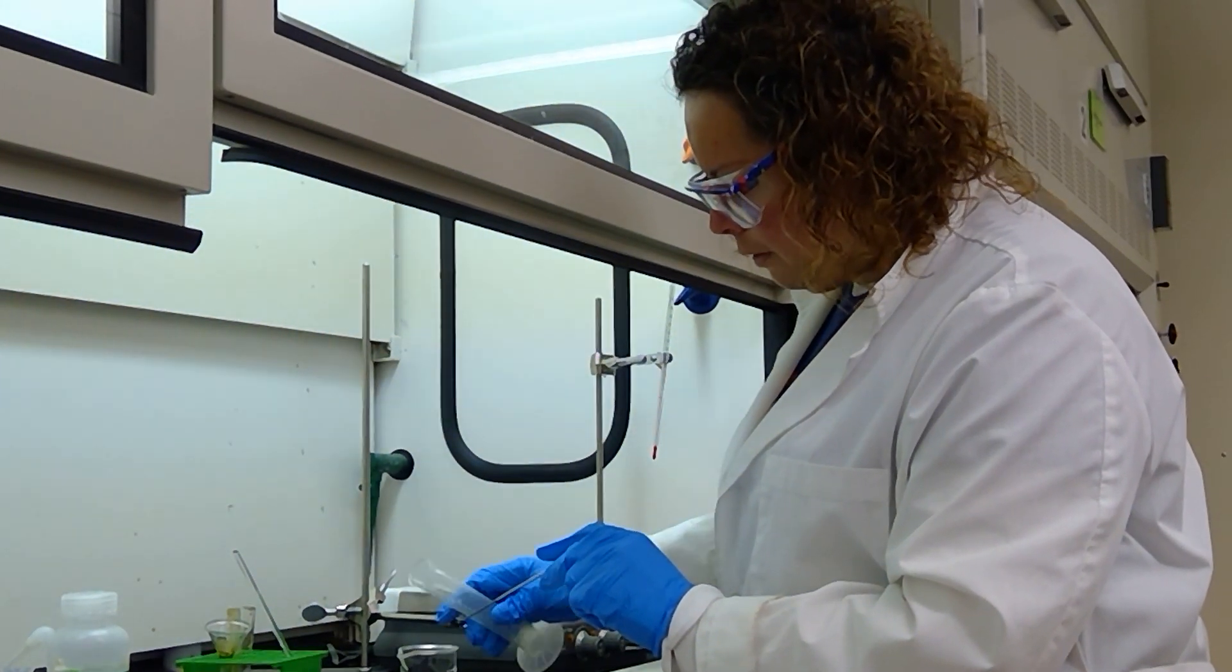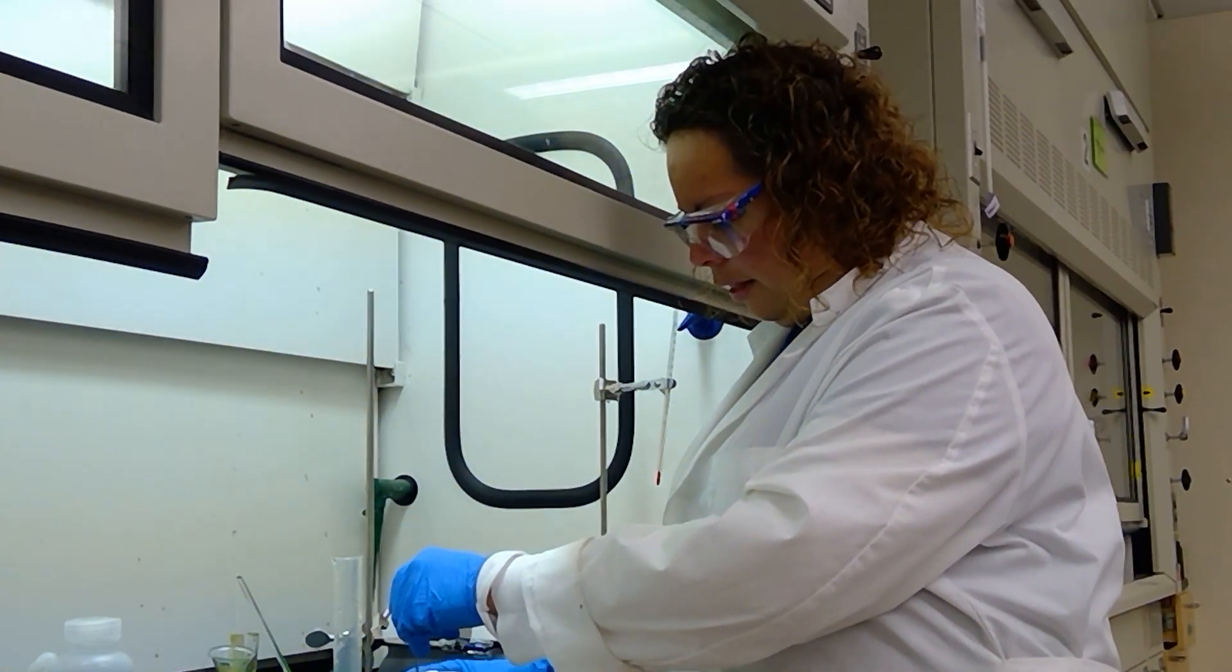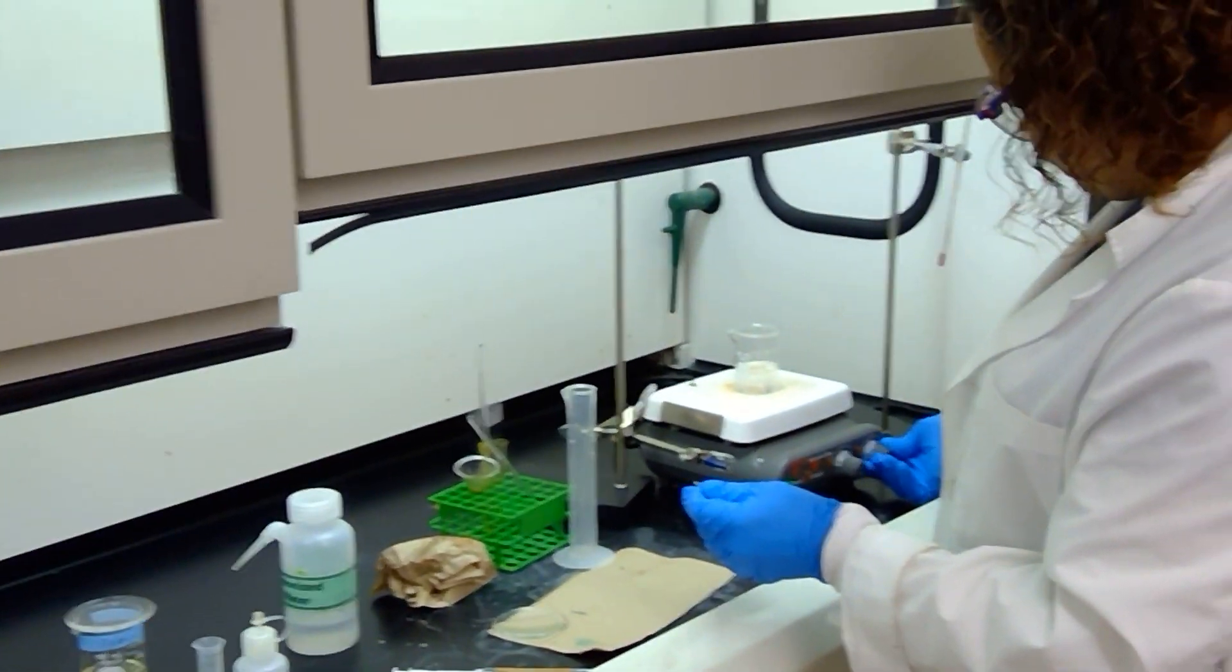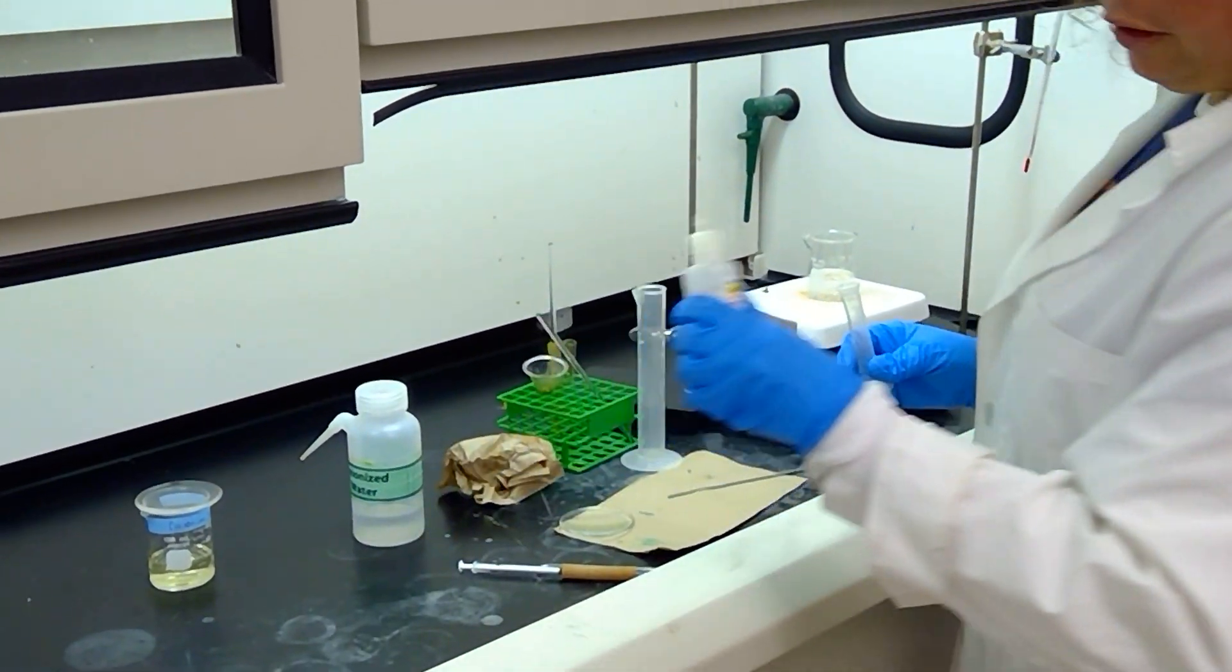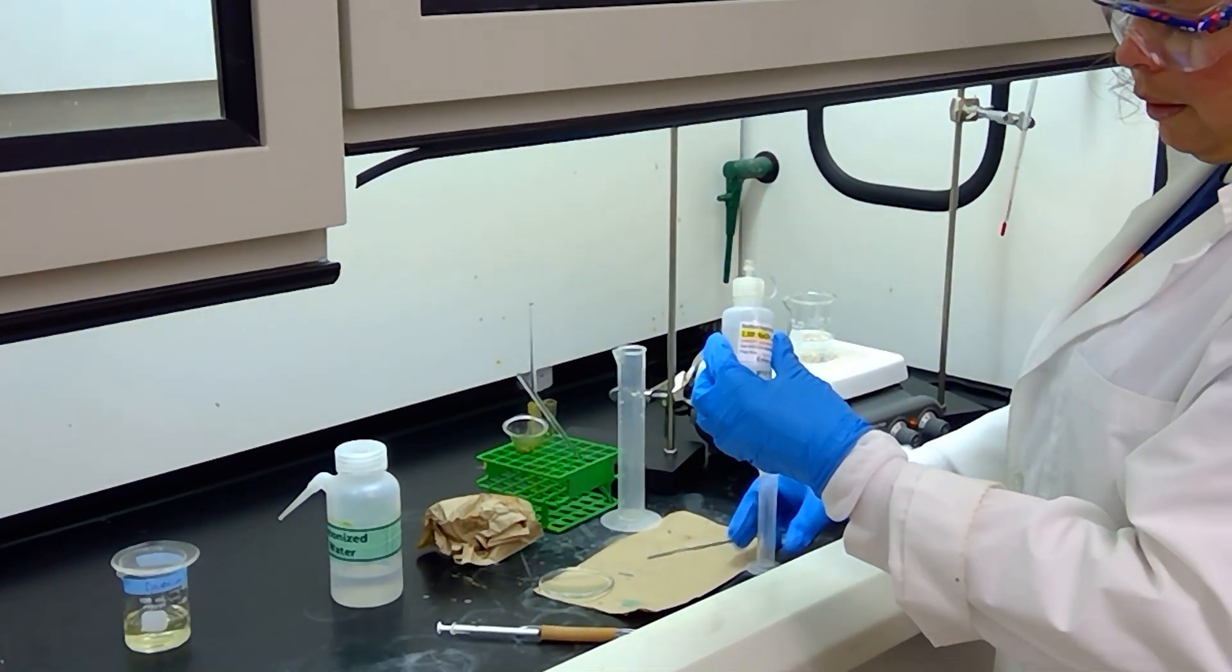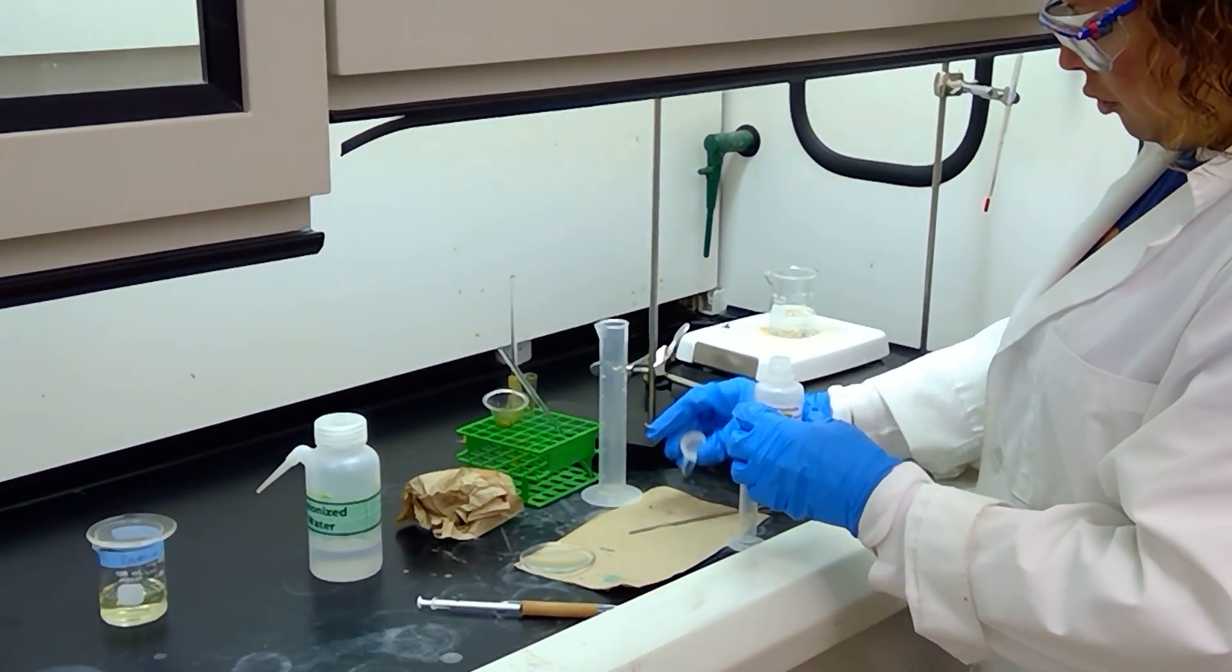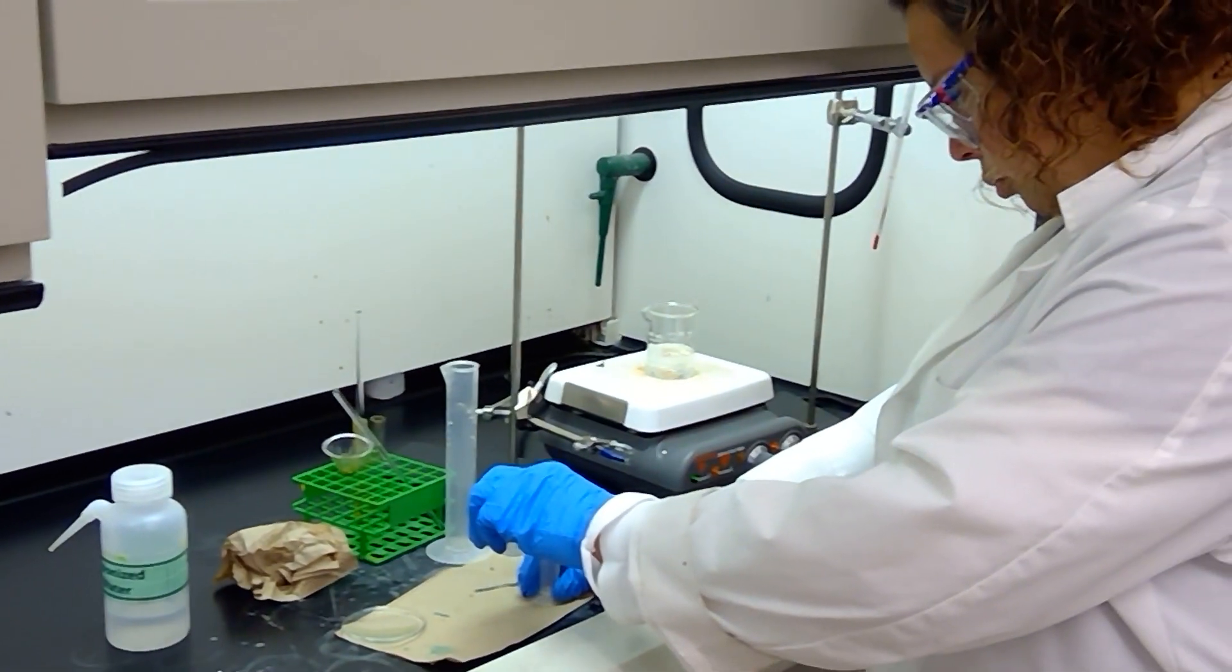We're going to warm the solution in order to help it dissolve better. And then besides water, we're also going to add some sodium hydroxide to the solution. So I'm going to add 5 milliliters of a 2.5 molar solution of sodium hydroxide to my solution, and that should help the 2-naphthol dissolve even more.